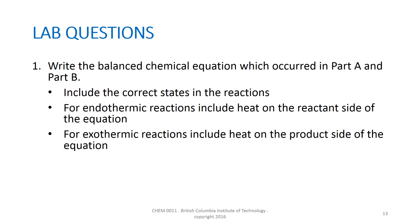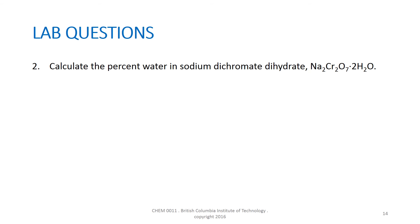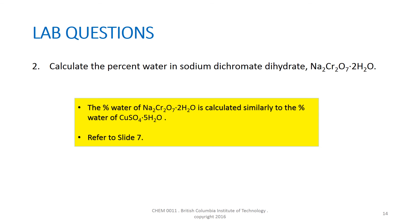The first lab question involves writing the chemical reactions which occurred in parts A and B. When writing the reactions, make sure they are balanced, pay attention to subscripts and superscripts, include the physical states of all substances, and include heat in the chemical reaction. If the reaction is endothermic, heat is written on the reactant side; if exothermic, heat is written on the product side. The second lab question asks to calculate the theoretical percentage of water in sodium dichromate dihydrate; consult slide 7 and note that the number of moles of hydrate is different in this case.